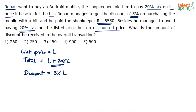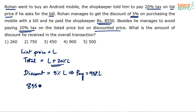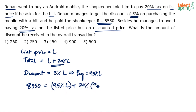Basically, the total is made up of two components: L plus 20% of L — the price plus the tax. He got a 5% discount, which means he has to pay only 95% of the list price. So, we can say that ₹8,550 that he has paid equals 95% of the list price, and he will pay 20% tax on this 95% of the list price.